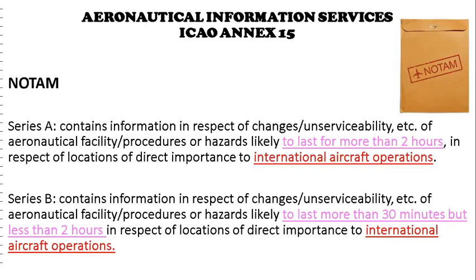There are several types of NOTAMs. Series A NOTAM contains information about an aeronautical facility, service, procedure, or hazard likely to last for more than two hours, in respect of a location of direct importance to international aircraft operations. Series B NOTAM contains information regarding changes or unserviceability of an aeronautical facility, procedure, or hazard likely to last more than 30 minutes but less than two hours, also in respect of a location of direct importance to international aircraft operations.